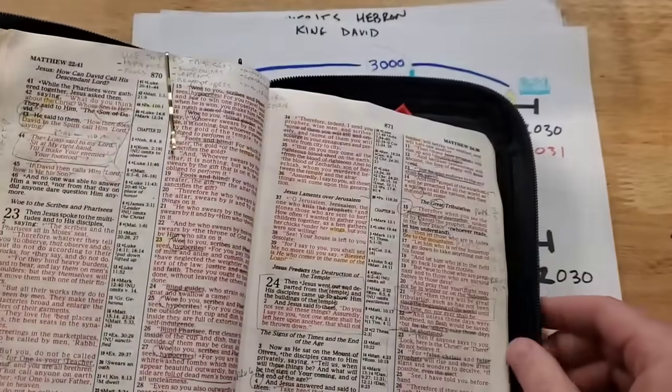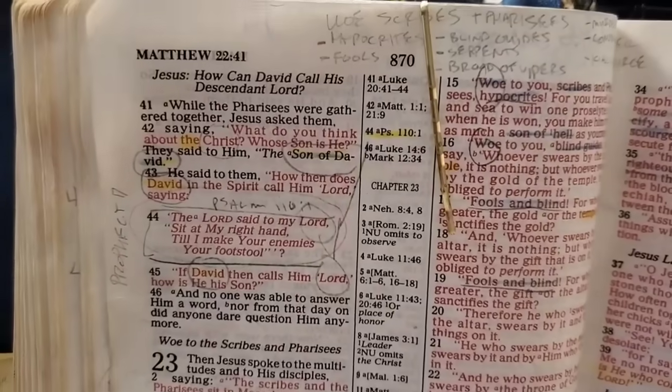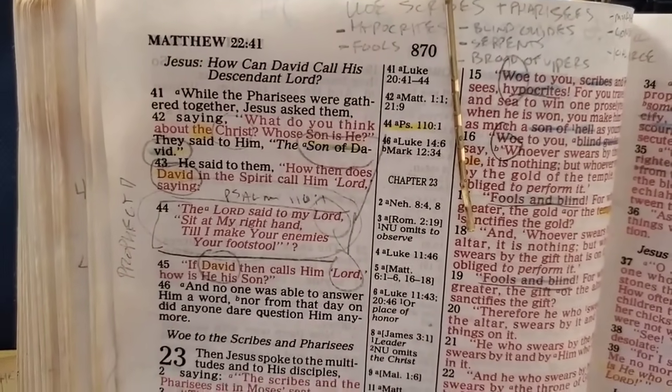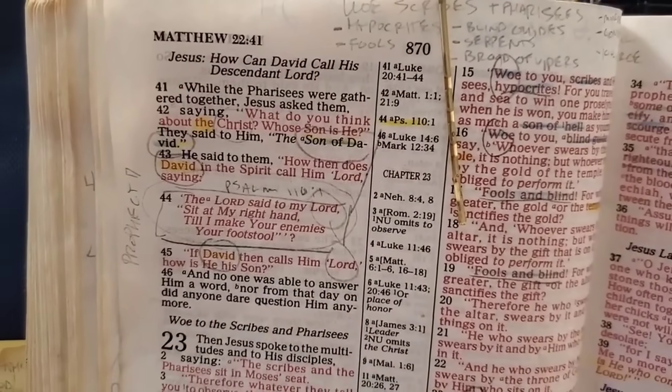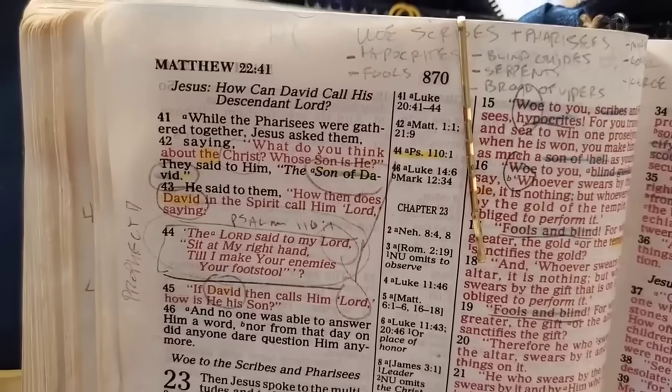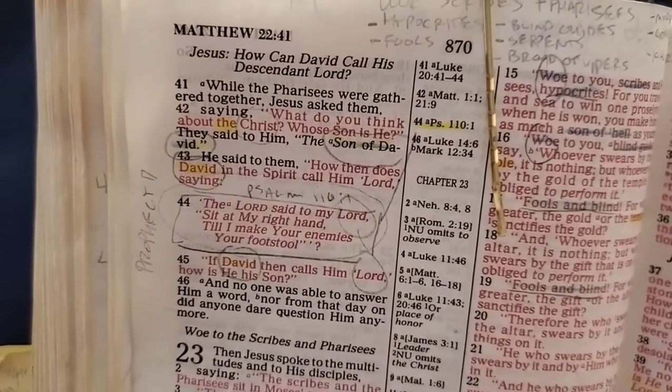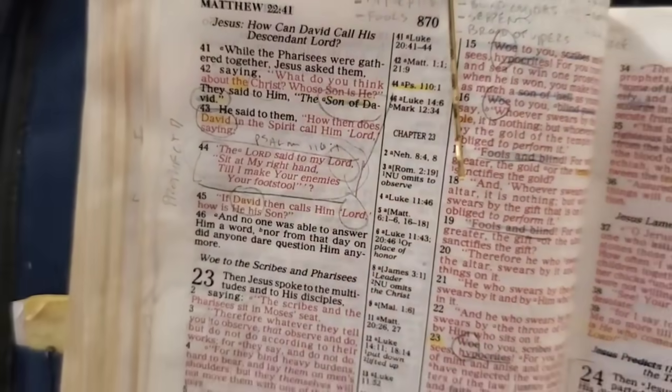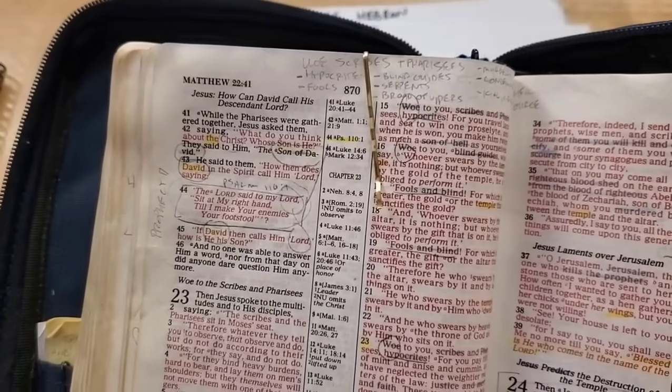And when the Pharisees challenge him, Jesus says, hey, what do you think about the Christ? The Messiah. Okay, so Christ means Messiah. So whose son is he? They said, well, he's the Son of David. So the Pharisees knew that the Messiah, the Christ, was going to come from the line of David. And then, of course, Jesus quotes Psalm 110. The Lord said to my Lord, sit at my right hand. If David then calls him Lord, how is he his son? So they were stumped. But the point is, Jesus, his identity is the Son of David. And that's what they expect. That's what Israel expects.